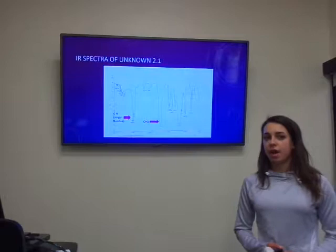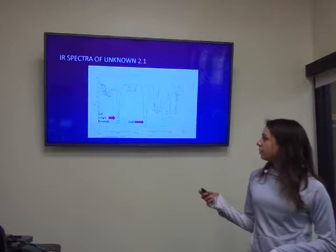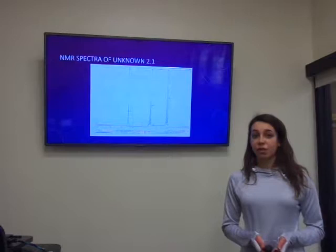A similar procedure was carried out for both unknowns 2.1 and 2.2. In unknown 2.1 a CH singly bonded and a C double O functional group were detected and there were three different types of hydrogens in a 3 to 2 to 1 ratio. We were able to determine that unknown 2.1 was ethyl formate.